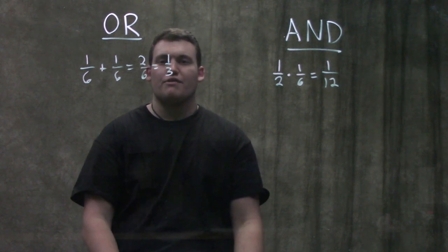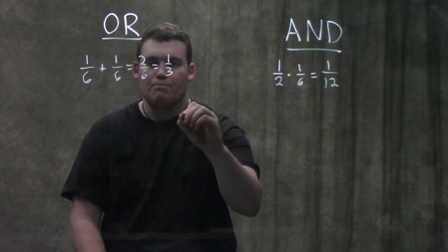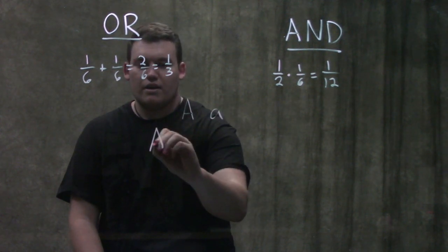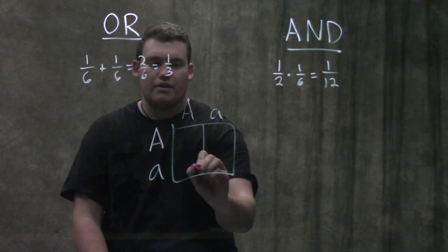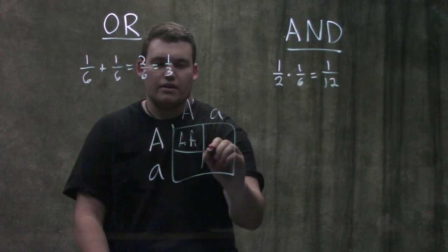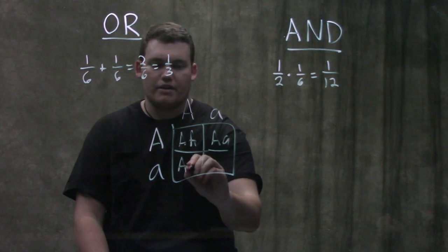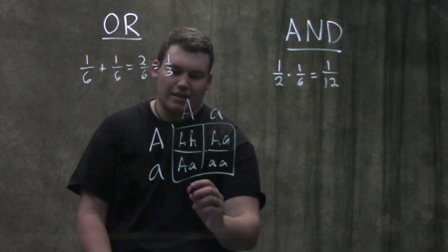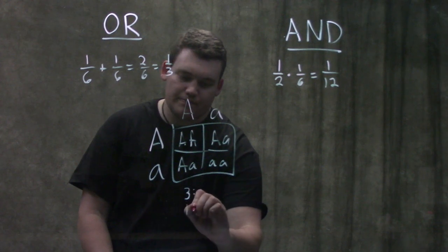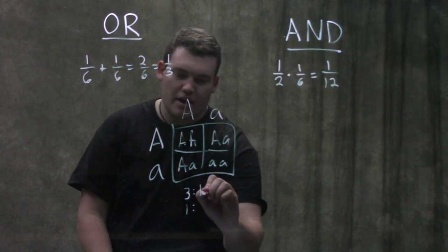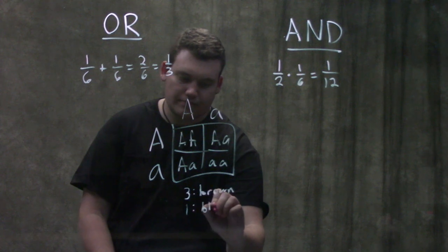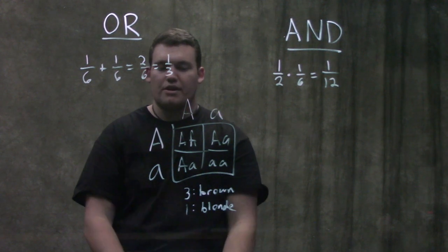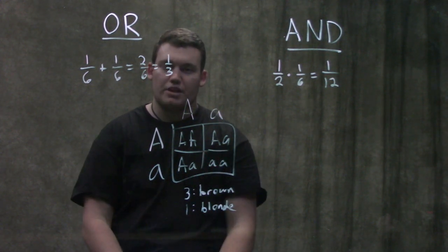The most basic genetics example: brown hair is a dominant allele. Mom and dad are both Aa. When you do the Punnett square you get a phenotypic ratio of 3:1, brown to blonde. The chance in general that a baby has brown hair from these two parents is 75% or 0.75.